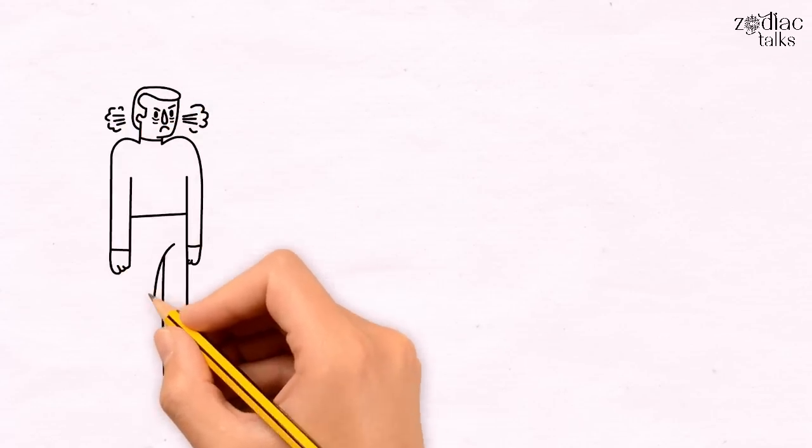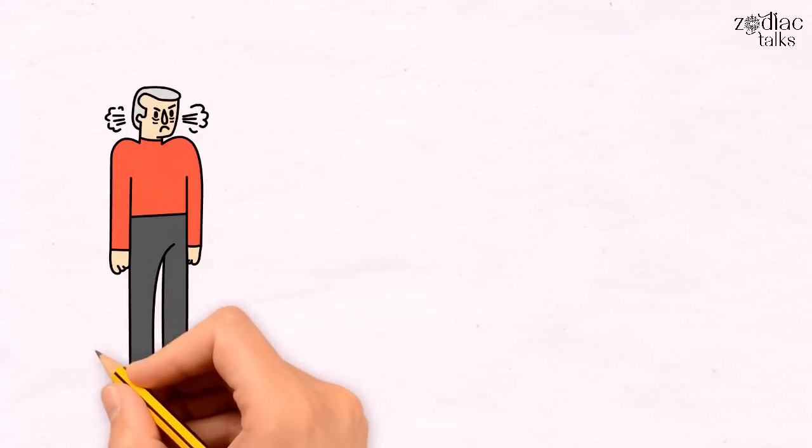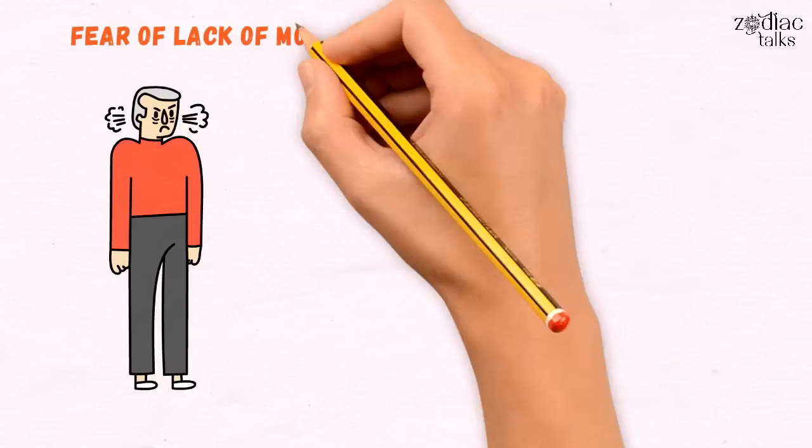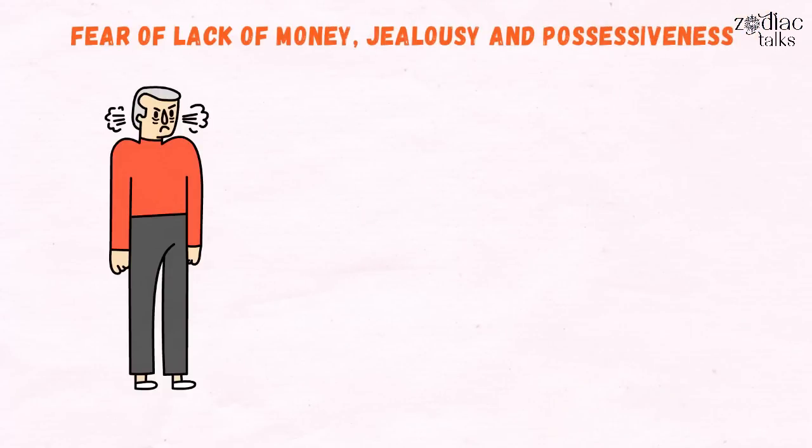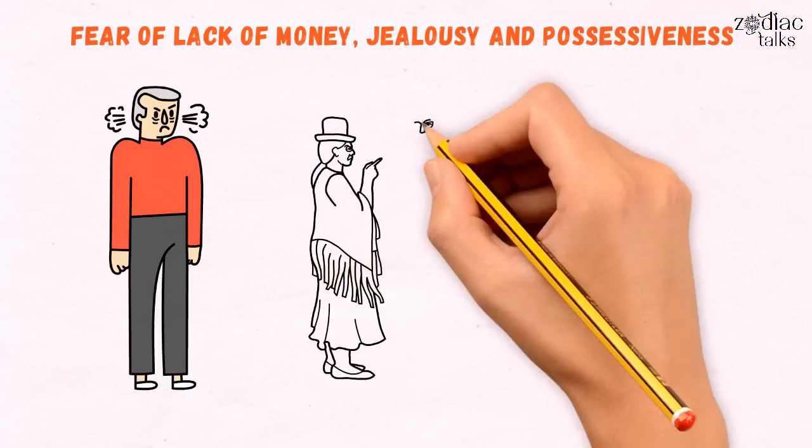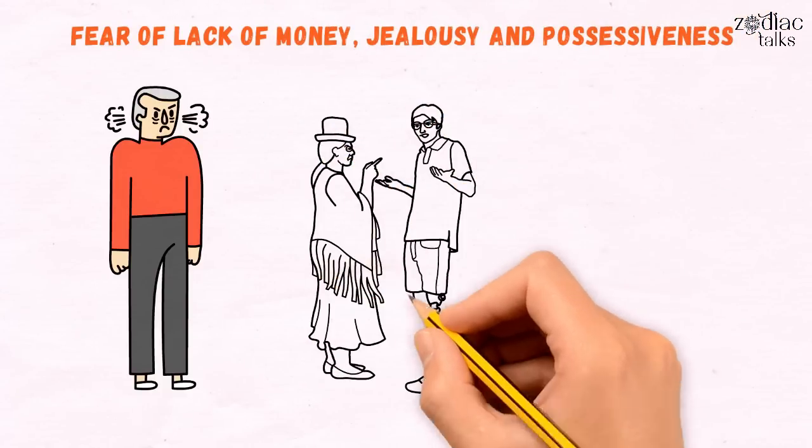Taurus can also be very selfish and egotistical when they fall under the spell of low vibration energy, like fear of a lack of money, jealousy, or possessiveness. They also have a nasty tendency to treat their loved ones like their property.